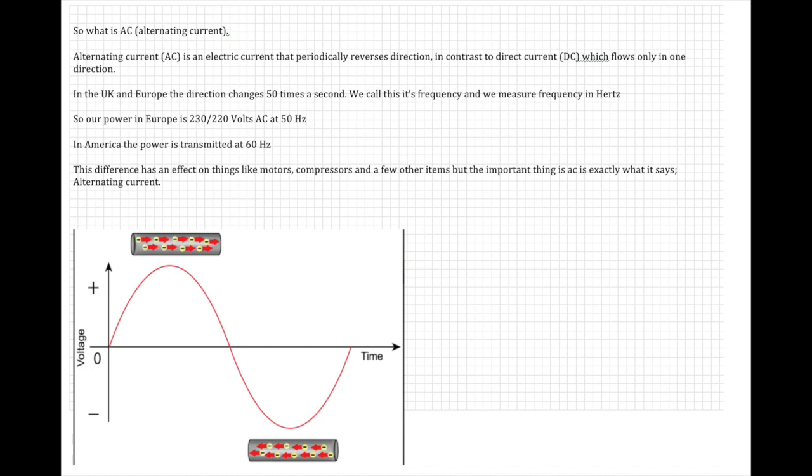In America, the power is transmitted at 60 Hertz. This difference in frequency has an effect on things like motors, compressors, and a few other things. But fundamentally, the principle is the same. And AC is exactly what it says, alternating current.